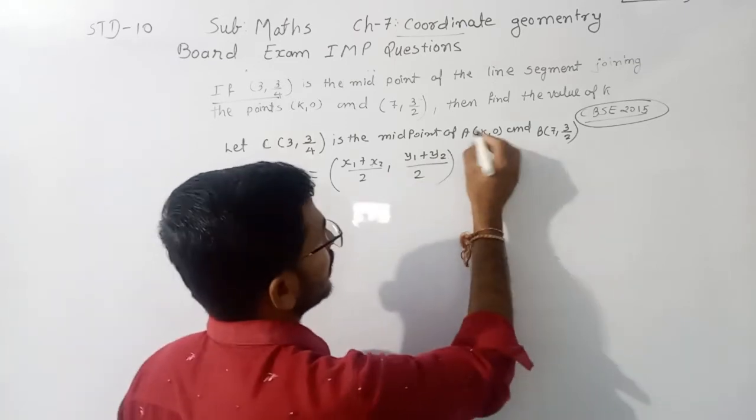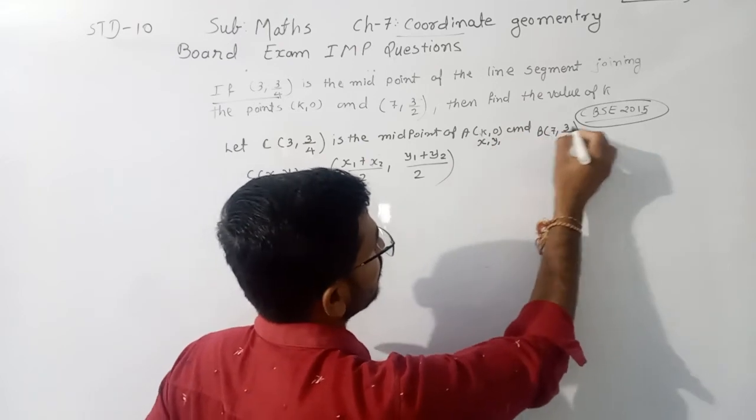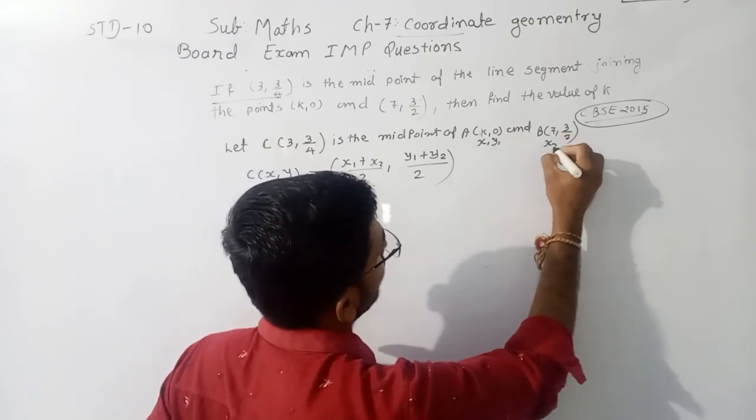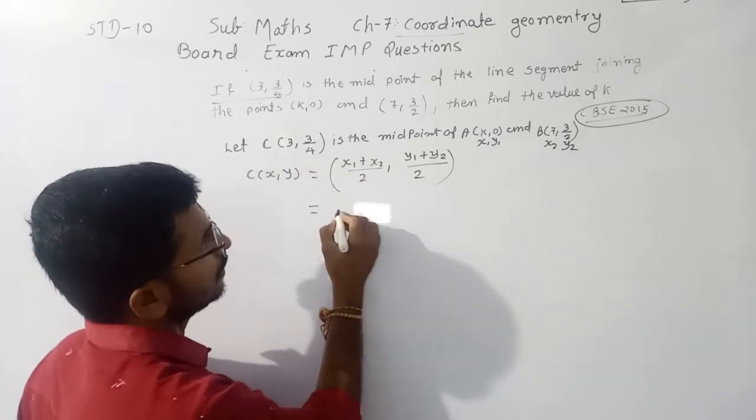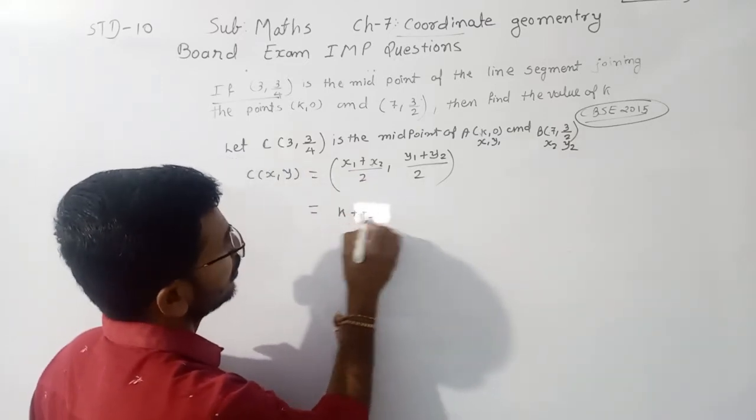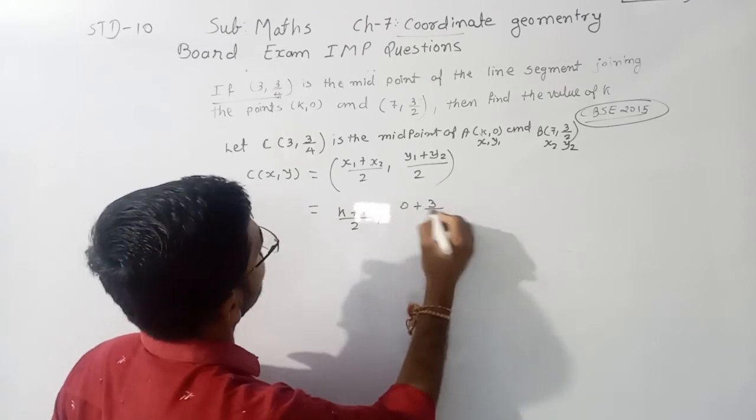Now we take A(K,0) as (x1,y1) and B(7, 3/2) as (x2,y2). Now put the value: (K+7)/2 and (0+3/2)/2.